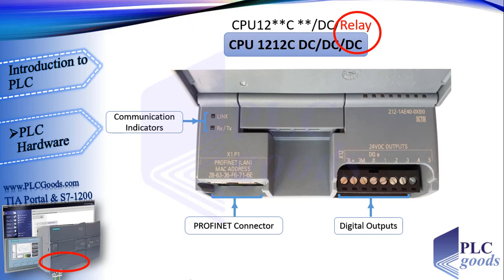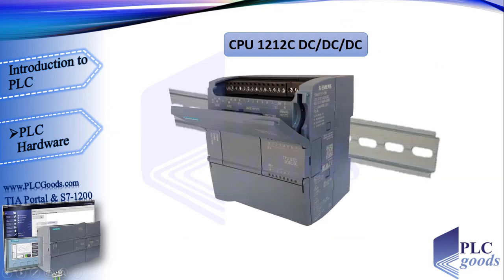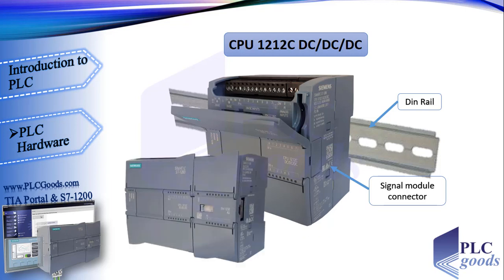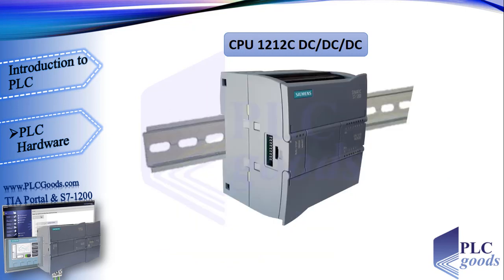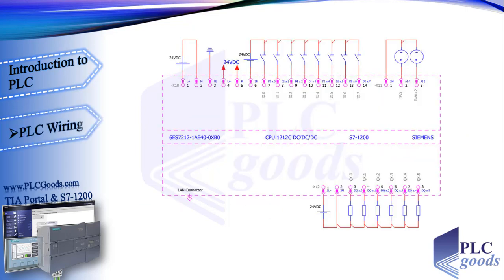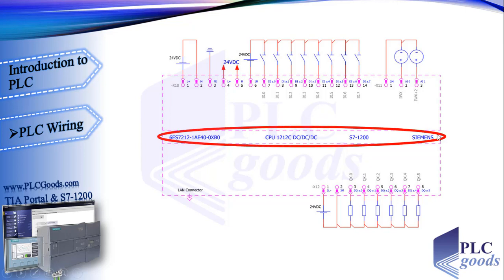Some PLC outputs have relay outputs, identified by the word 'relay' in the model name instead of DC. Here is the article number of my CPU. PLCs can usually be installed on a DIN rail easily. You can add other S7-1200 modules beside the CPU using connectors. Since my CPU has no analog output, I can connect an analog output module if needed. The left connector is for communication modules, for example for a PROFIBUS network. You can also use a signal board or communication board on this CPU.